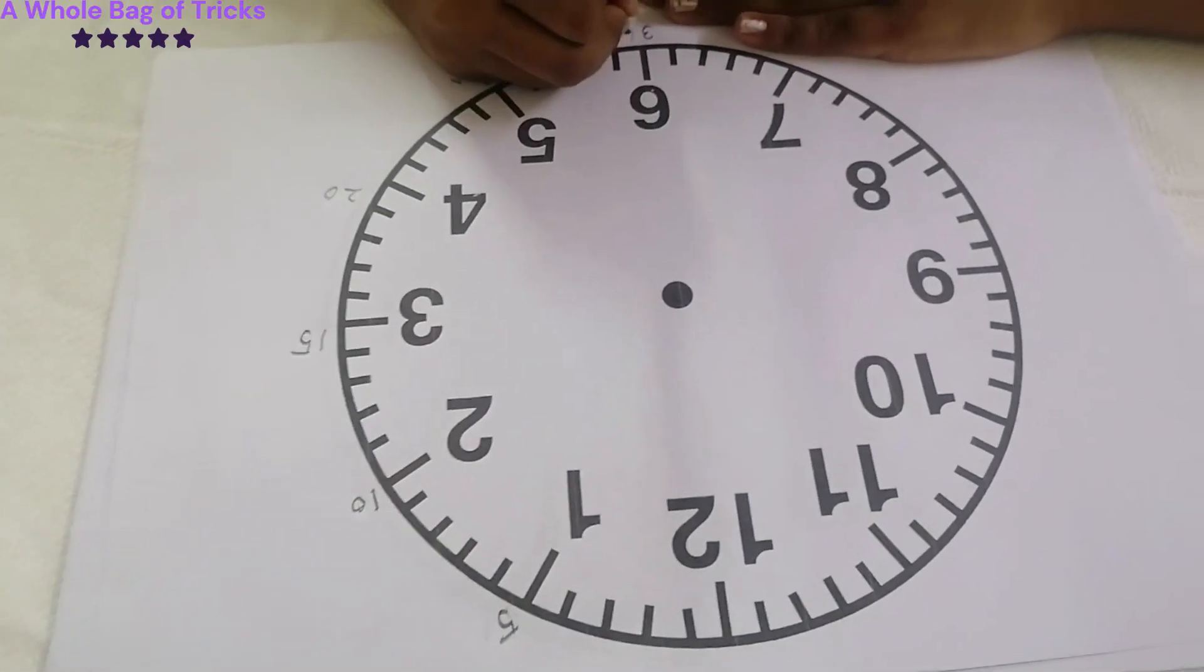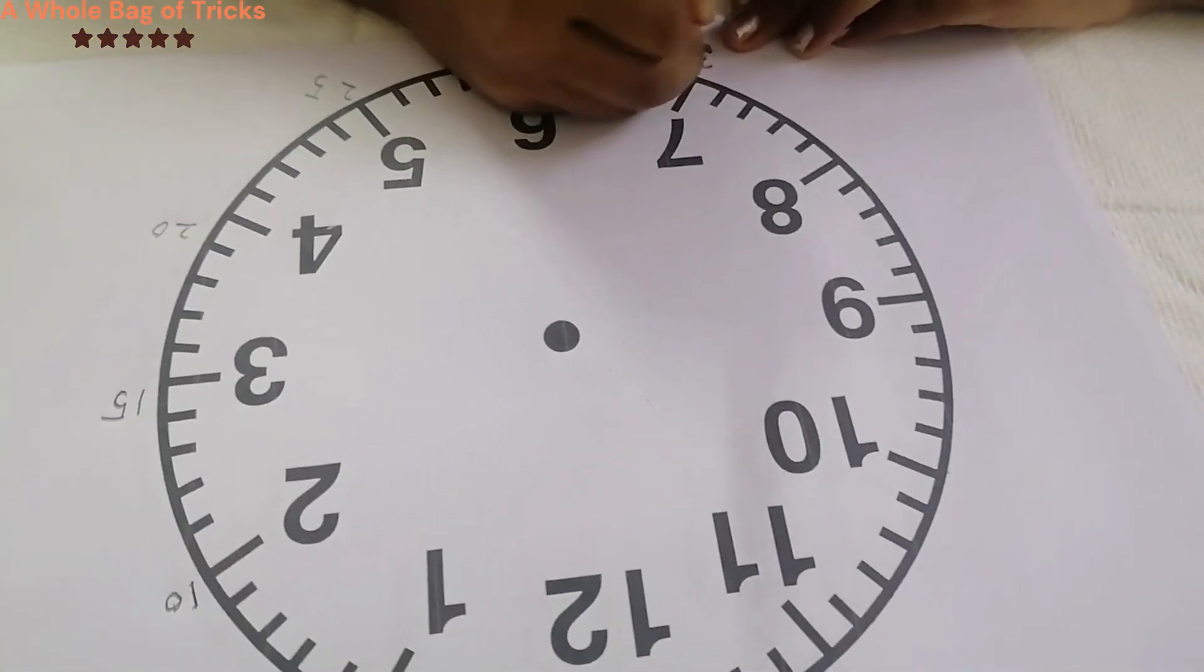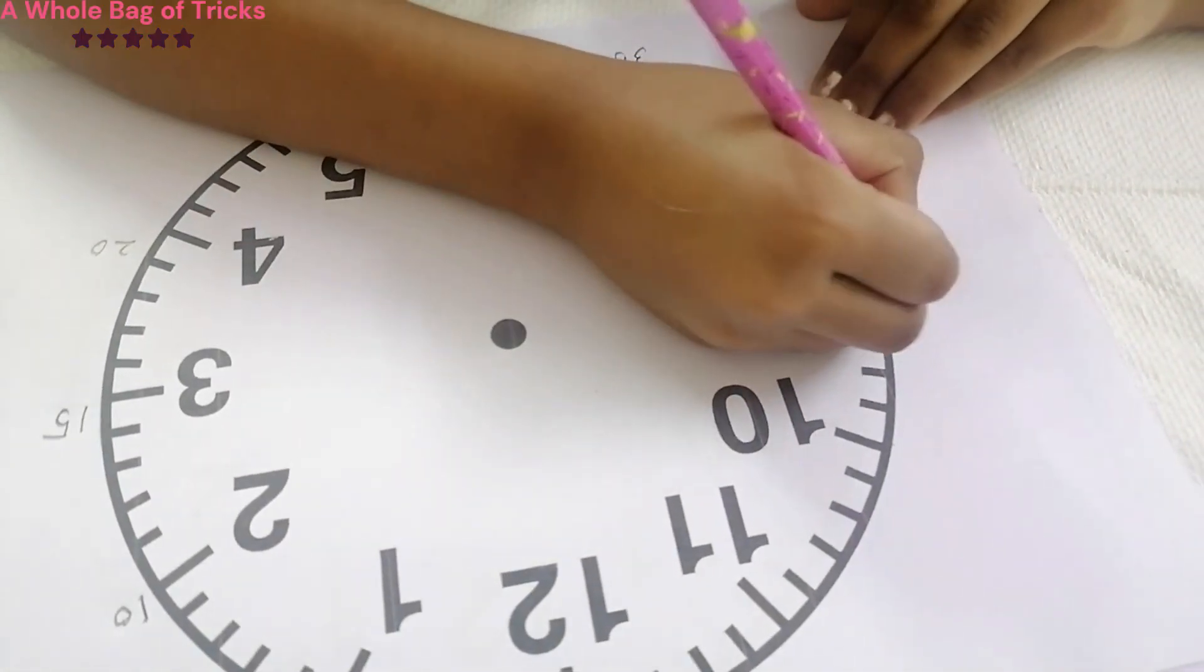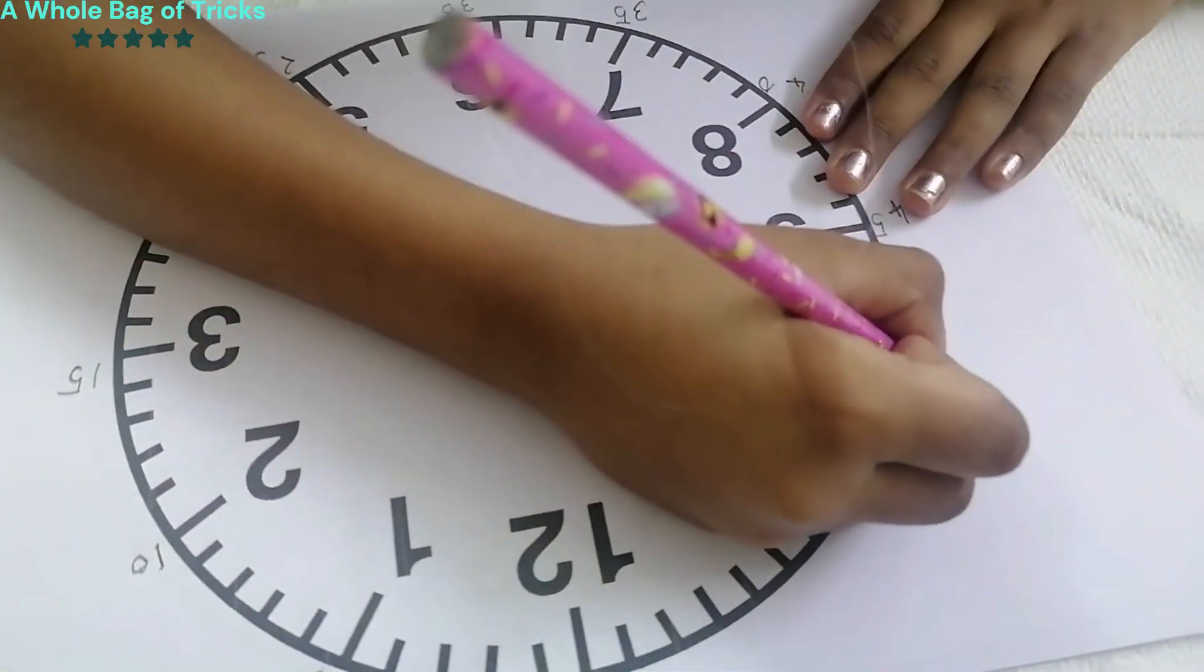Once this step is over, teach them that these numbers inside the clock's face is the hour and the small lines and the numbers they have written outside the clock's face is the minutes.